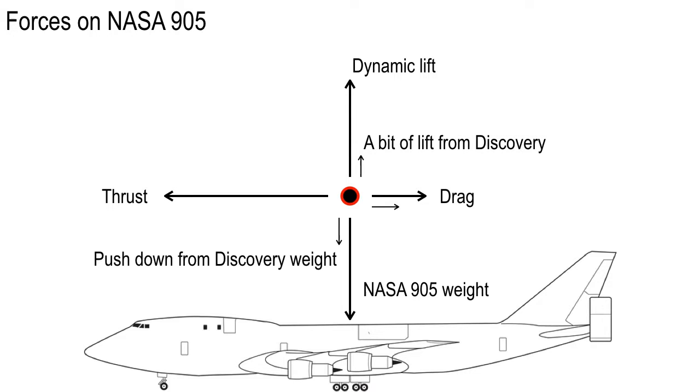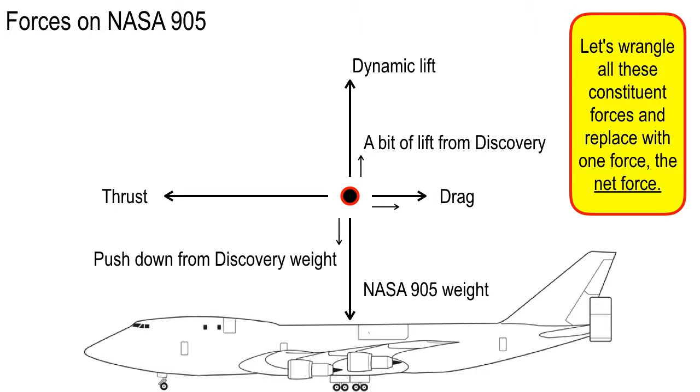The forces going backwards or aft in this diagram to the right are drag. You're going to get a little bit of drag from the 747 itself, that's the big arrow, and then you'll get a little bit from the space shuttle. Now what we're going to do is wrangle all these forces together and synthesize or replace them with one single net force vector. That's our task in this mini lecture.